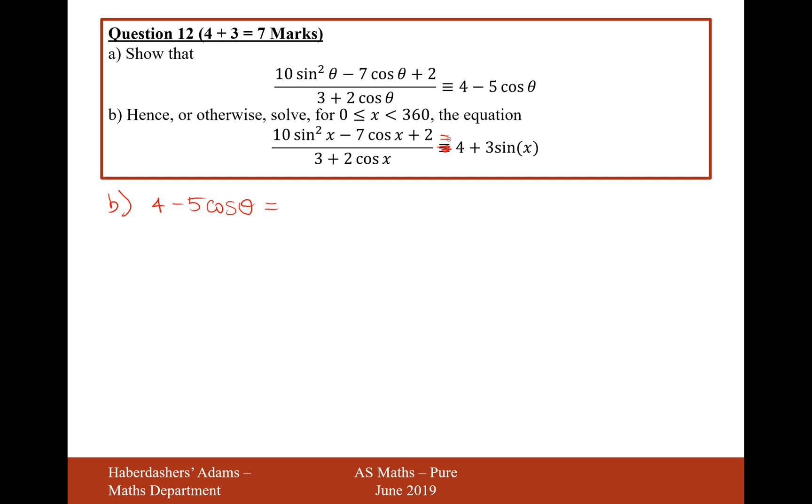So now it's equal to 4 plus 3 cos theta, or x or theta, it doesn't really matter. So now what I'll do is I'll cancel out the 4s on both sides because they've both got a 4 on both sides there.